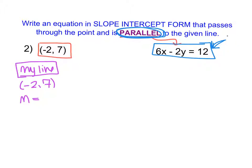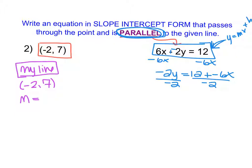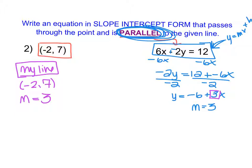To find the slope, I need to write the given line into y equals mx plus b form. Using keep-change-change, I subtract 6x from each side: negative 2y equals 12 plus negative 6x. Dividing both sides by negative 2, I get y equals negative 6 plus positive 3x. So the slope of this line is 3. Because these two lines are parallel, the slope of my line — the one I'm writing the equation for in purple — is also 3. They both have a slope of 3.